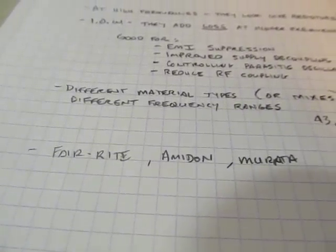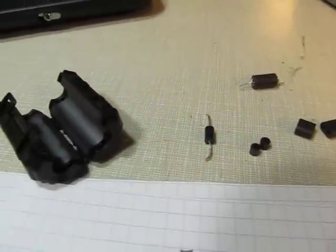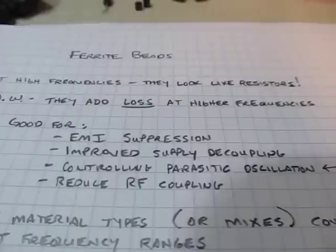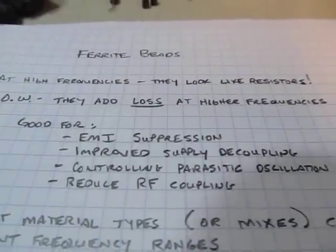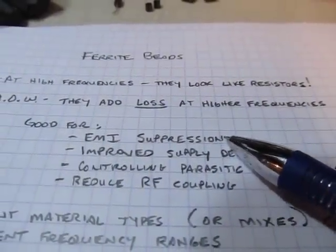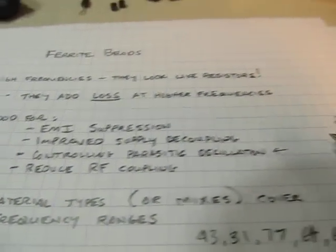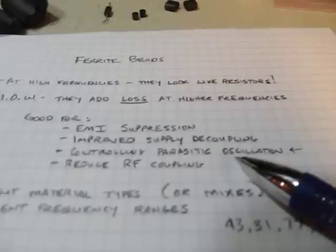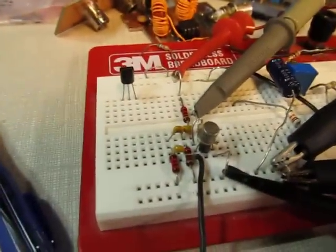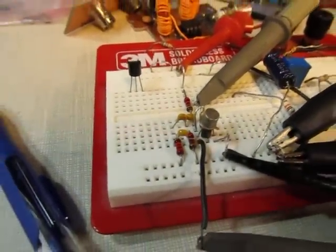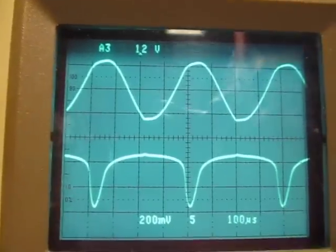I hope this was a good introduction to what ferrites are and some of their applications: EMI suppression such as limiting edge speeds to reduce radiation, improving power supply decoupling, and controlling parasitic oscillation. You may want to consult manufacturer website material as well. Any questions, let me know — this is just intended to be a little introduction to the topic. Thanks for watching.